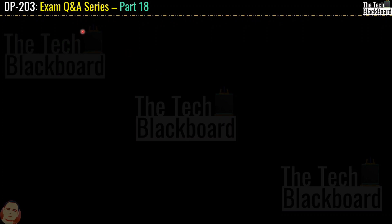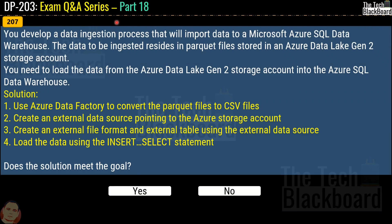Let's begin part 18 of the DP203 exam Q&A series with question number 207. The question says that you develop a data ingestion process that will import data to Microsoft Azure SQL Data Warehouse. The data resides in Parquet files stored in an Azure Data Lake Gen2 storage account. The proposed solution is: use Azure Data Factory to convert the Parquet files to CSV files, create an external data source pointing to the Azure storage account, create an external file format and external table using that data source, then load the data using an INSERT SELECT statement. The correct answer is no — this solution does not meet the goal.